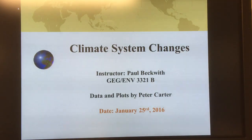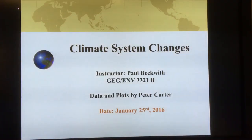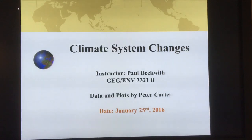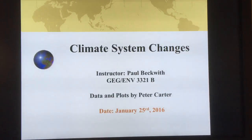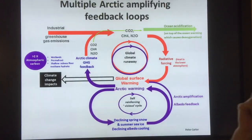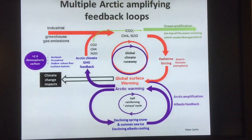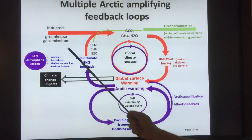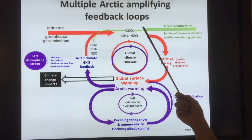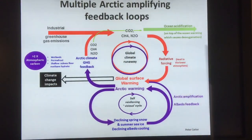I'm just going to hit the lights because the contrast is better. So in the Arctic there are multiple amplifying feedback loops. We have our greenhouse gas emissions — we're putting CO2, methane, and N2O, which is nitrous oxide, into the atmosphere, changing the chemistry of the atmosphere.